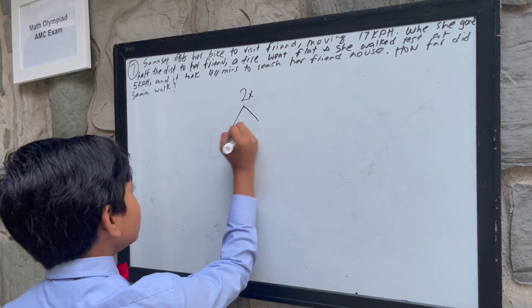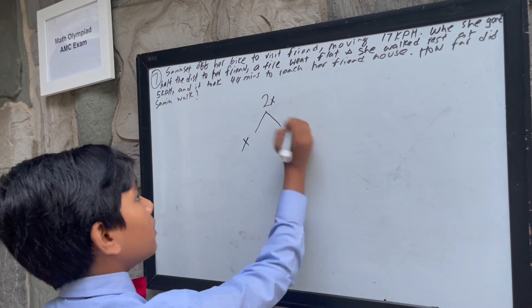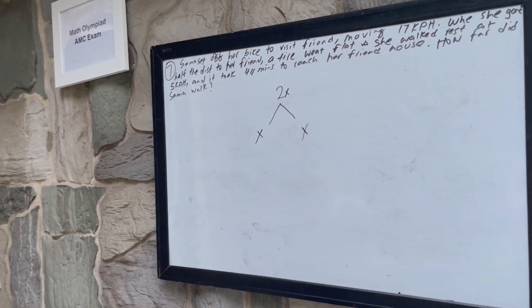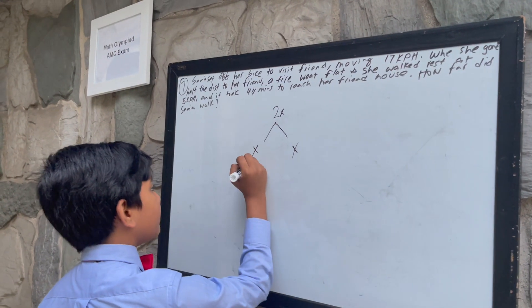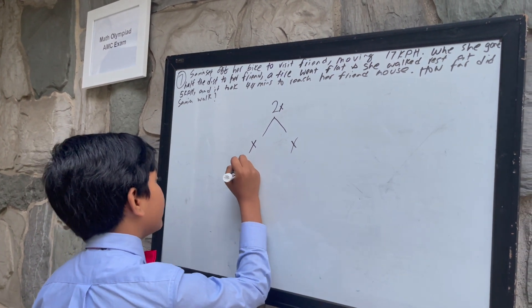So that means that she traveled X while biking and X while walking. Dream to win a gold medal in the International Math Olympiad? The god of math is here to help. She was moving 17 kilometers per hour on her bike.